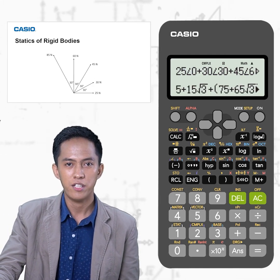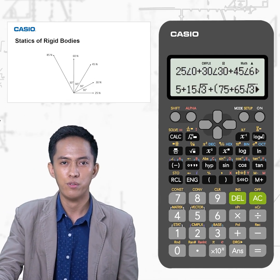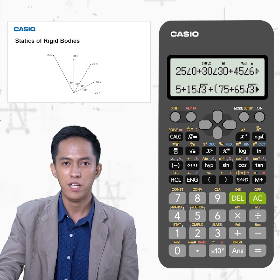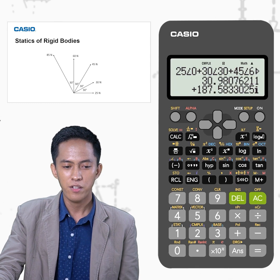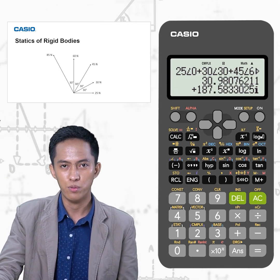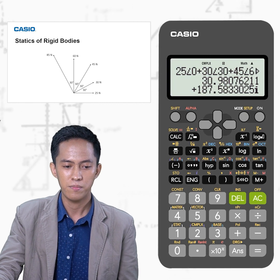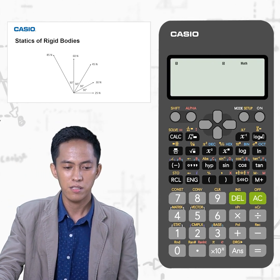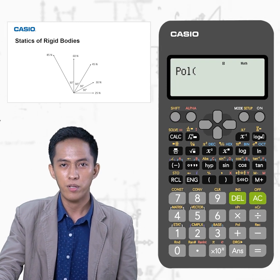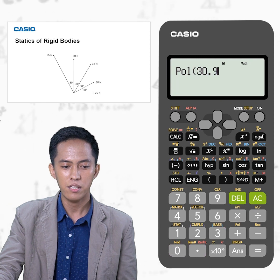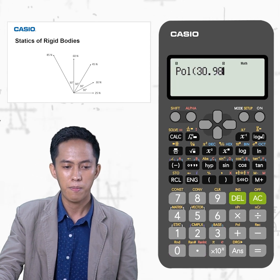These values are the x and y components of the resultant. To get the decimal form of this answer, press SD. Then remember these values to input into Mode 1. Press Mode 1, then press Shift-Pol, and input the components of the resultant: 30.98 Shift-Comma 187.58.